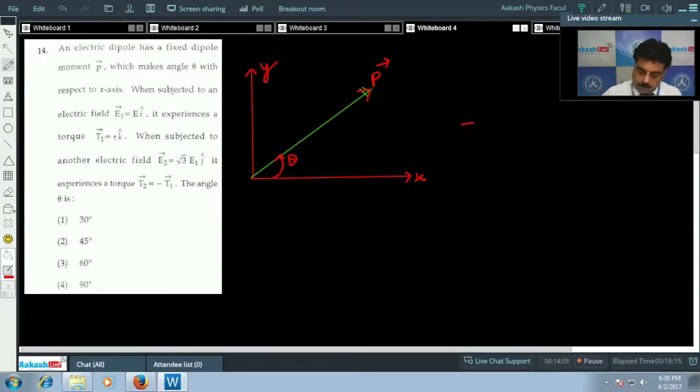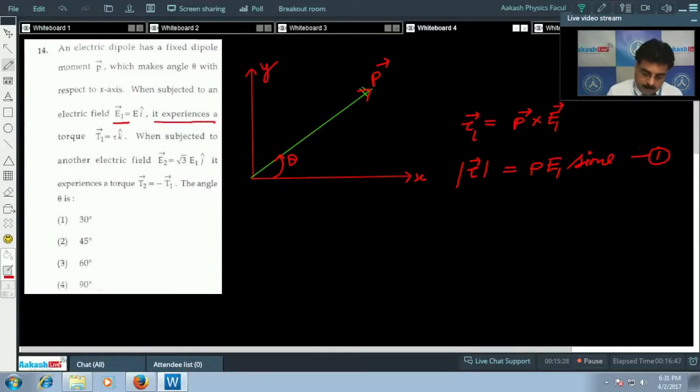We know that the torque is given by P cross E. If I use magnitude of the torque, according to the problem electric field is E1 and torque is tau 1. So we can write P E1 sin theta. This is my equation number 1. But it experiences a torque when subjected to another electric field E2 equals root 3 times E1 j cap. It experiences torque tau 2 equal to tau 1. This is a very important point.